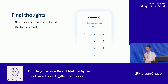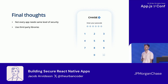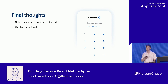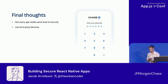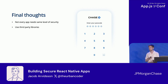The second point: use third-party libraries if you don't have these very strict requirements. For storage you can use Expo Secure Store or React Native MMKV. For biometrics you can use React Native Biometrics or Expo Local Authentication. There are a lot of these libraries, and if you don't want to spend a lot of time but still want to add a little bit of security, third-party libraries are a great option.